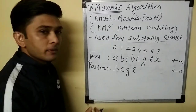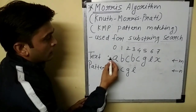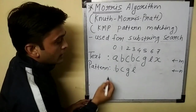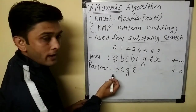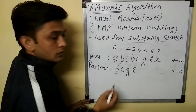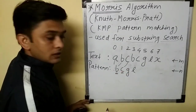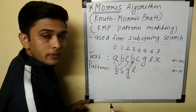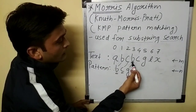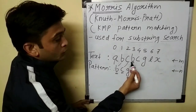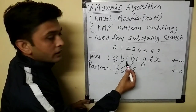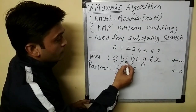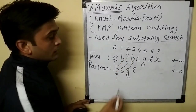This is the text and this is the pattern. In the usual way, the search starts from index zero in the text and index zero of the pattern. This A will be compared with B — no match. Then B from the pattern will be compared with this B — match. Then C is compared with C — match. Then G is compared with B — no match. In the usual way, we move to the previous character of the currently matched character in the text, and that character C will be matched with the starting character of the pattern, which is B — no match.